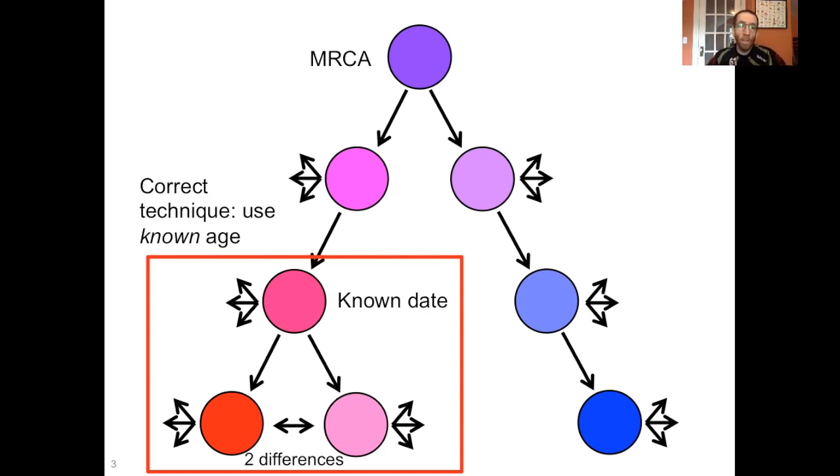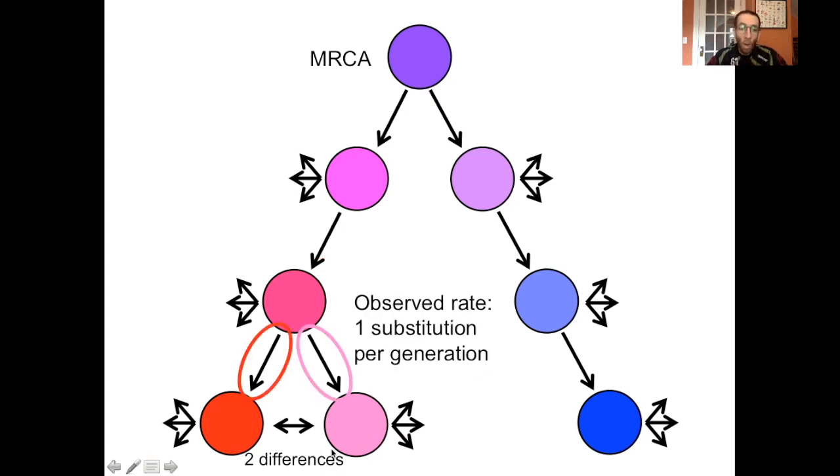So in this example, let's say we have a known date for this individual right here. And between these two individuals, we have two differences. Well, we can then say, we have one change called a substitution per generation, because for these individuals, you have one generation each between the common ancestor, and you have two total differences. So that means you have one substitution per generation.